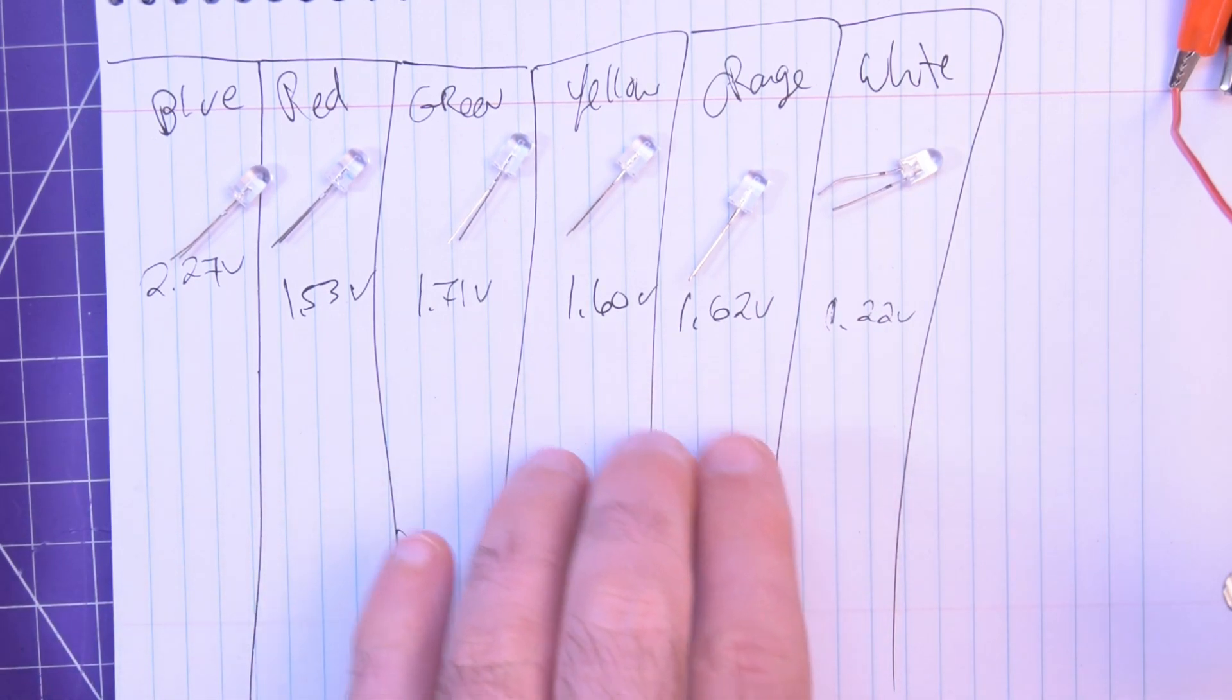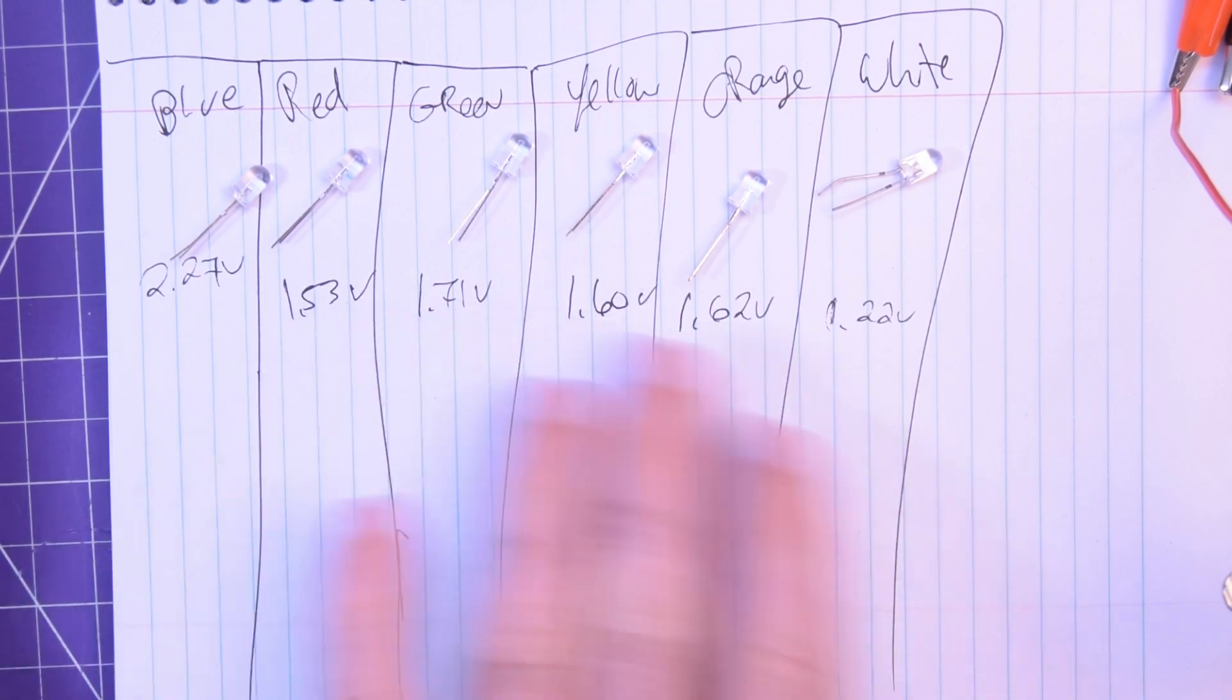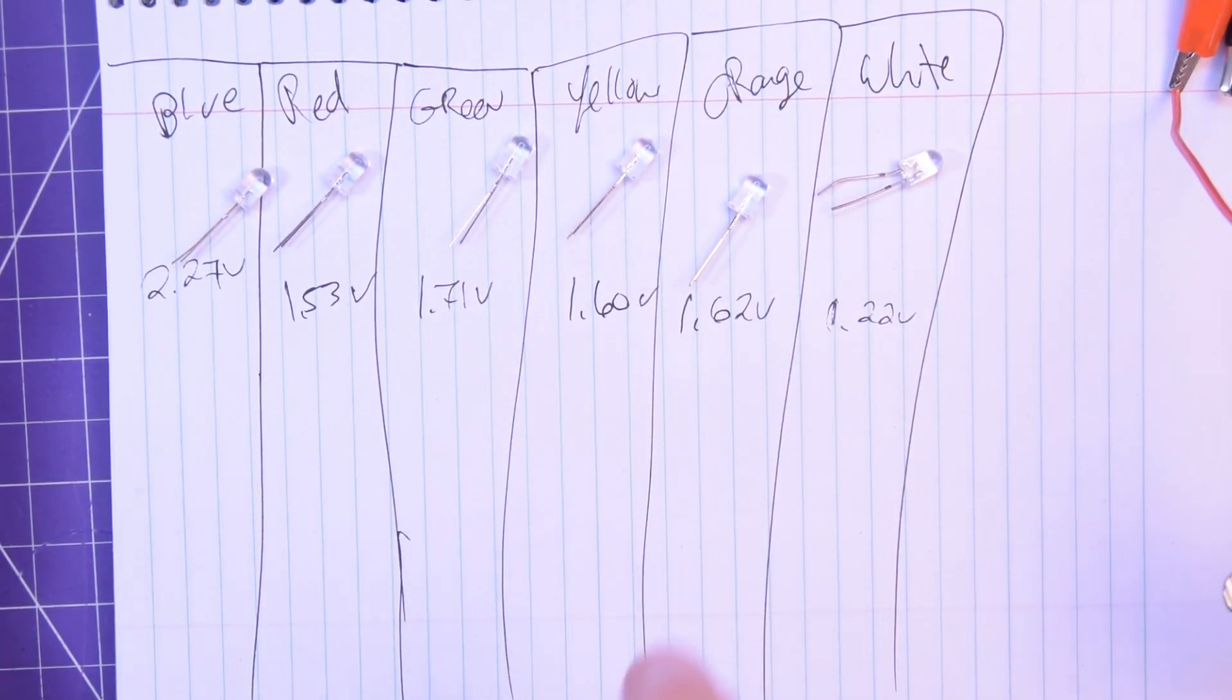And then, green, yellow, orange, they are around the same forward voltage with green being a bit higher. And so, it seems to track just like that. So, that is really cool.